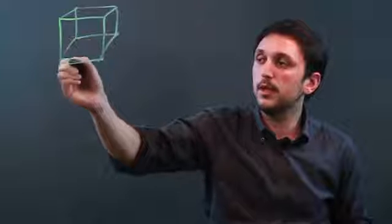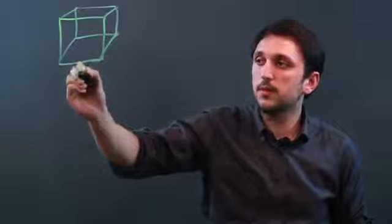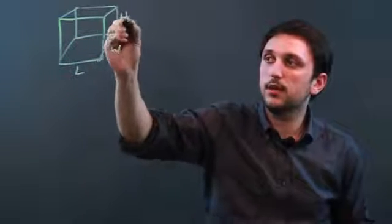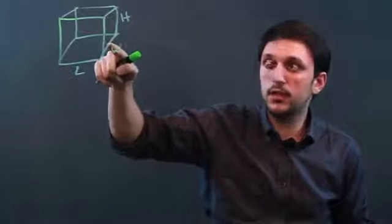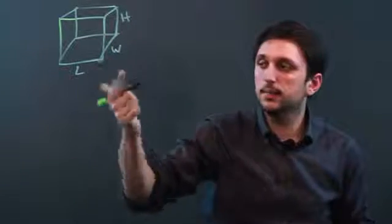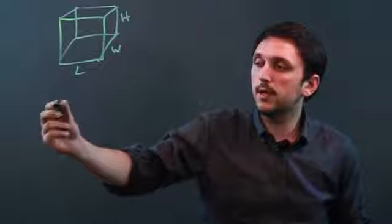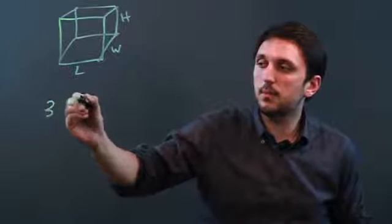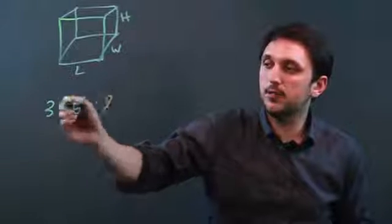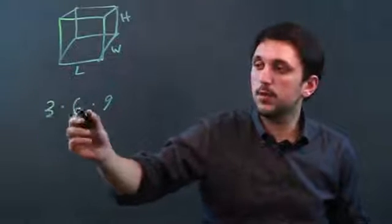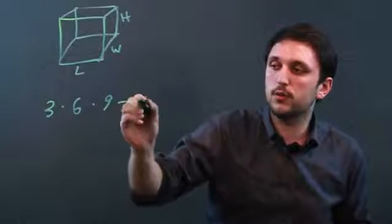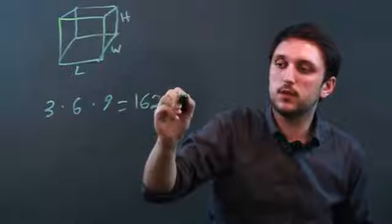Cubic refers to volume. So if you have a cube or a rectangular solid, the volume is the length times the width times the height. Some people like to call this the depth — either one is fine. So let's say we have a length times width times height of 3 by 6 by 9, and these are all feet. So 3 times 6 times 9 equals 162 feet cubed.